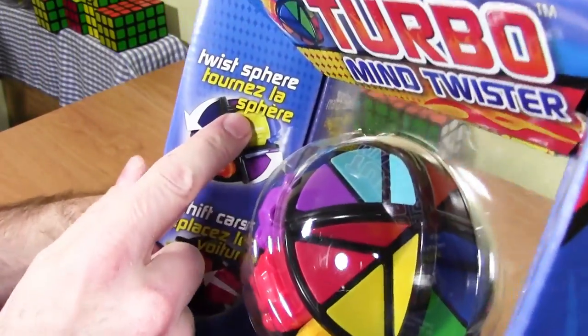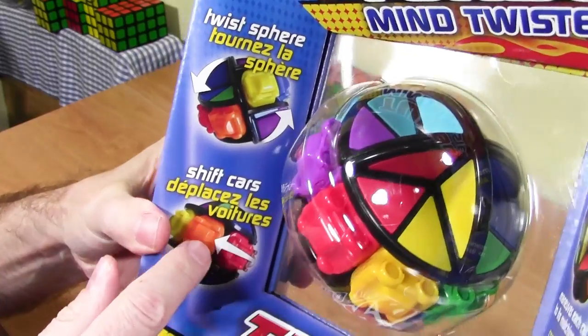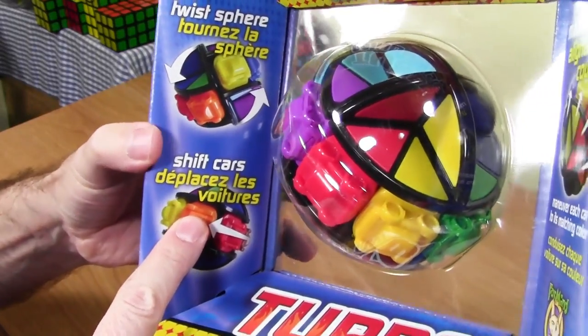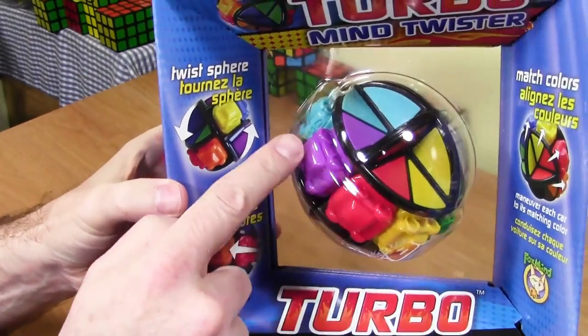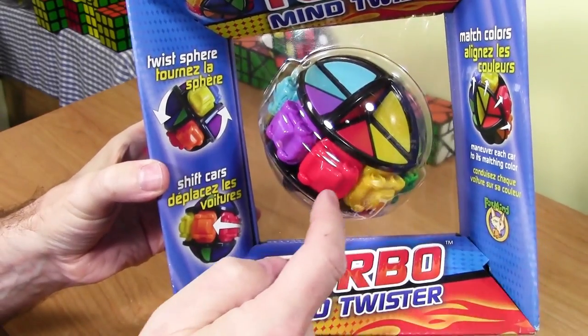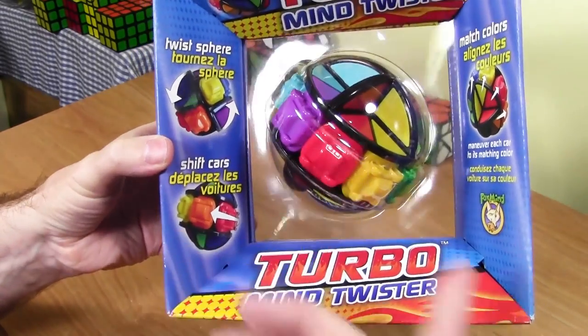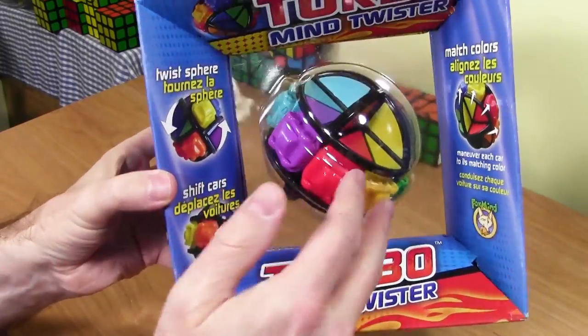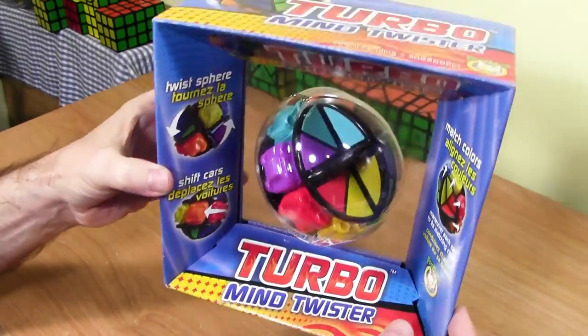And then over here it says twist the sphere and then shift car. So I'm sort of thinking that the spheres move and then the cars move, and you just kind of have to pair them up and match them up somehow. So it did intrigue me.